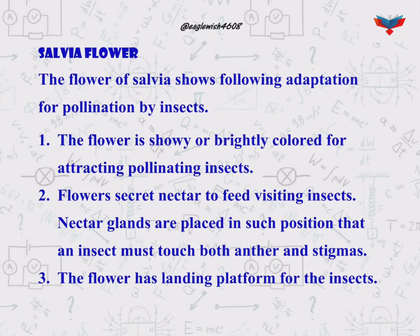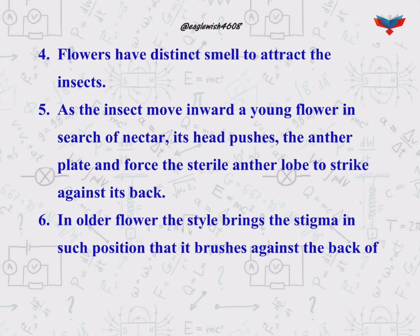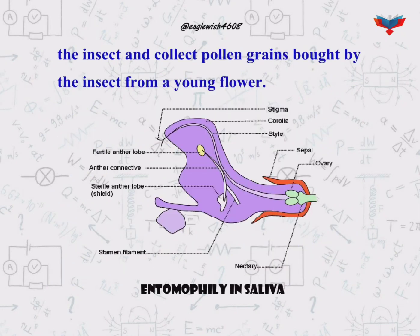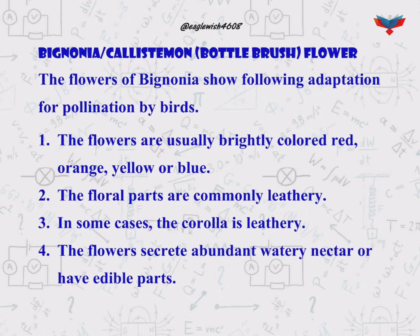Pollination by insects is known as entomophily. The diagram here shows the flower of salvia. We will also mention about bignonia or callistemon, which is also known as the bottle brush flower, which shows adaptation for pollination by birds.